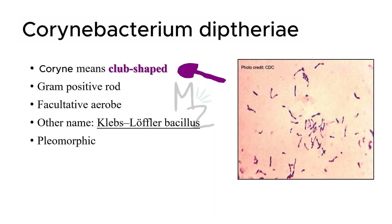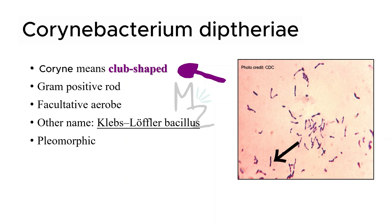It is cultured in a specific culture media. It is pleomorphic — 'pleo' means many and 'morph' is for shapes — meaning this bacterium exists in different shapes. It has a V-shape, L-shape, club-shape, and rod shape. As you can see in the picture, this is its V-shape, this is its L-shape, this is its club-shape, and this is its rod-shape.